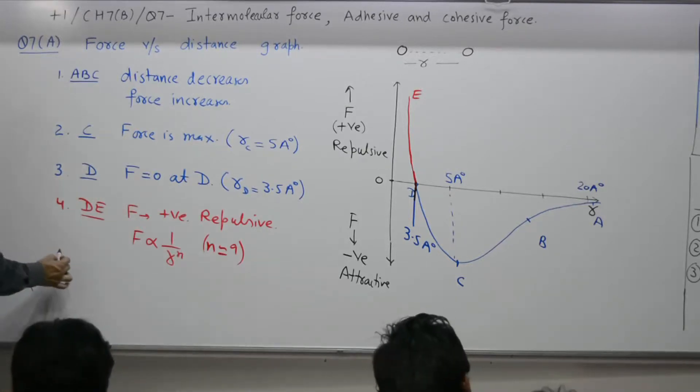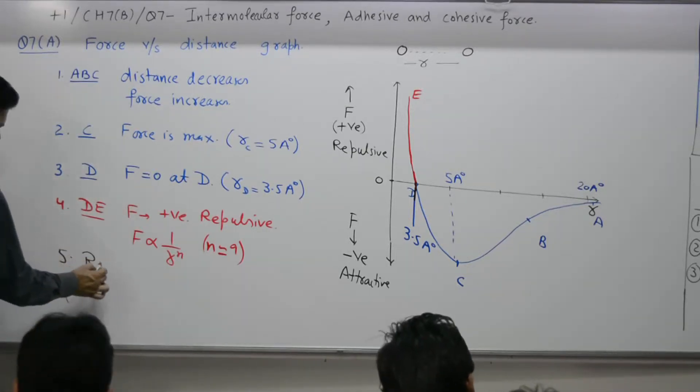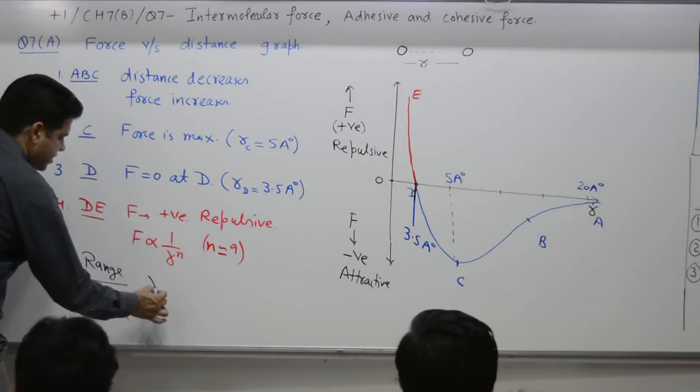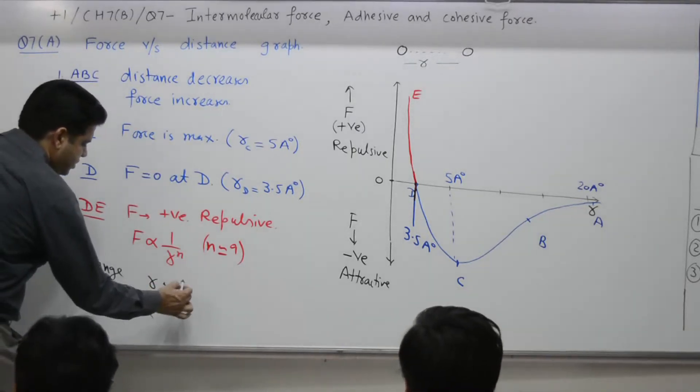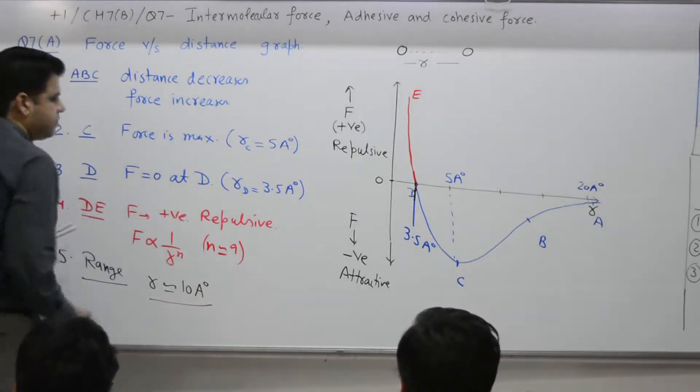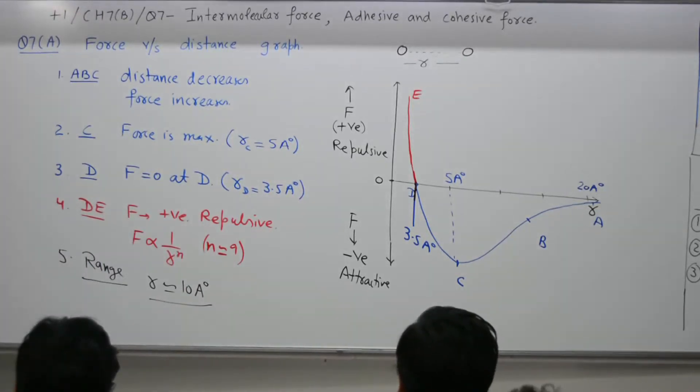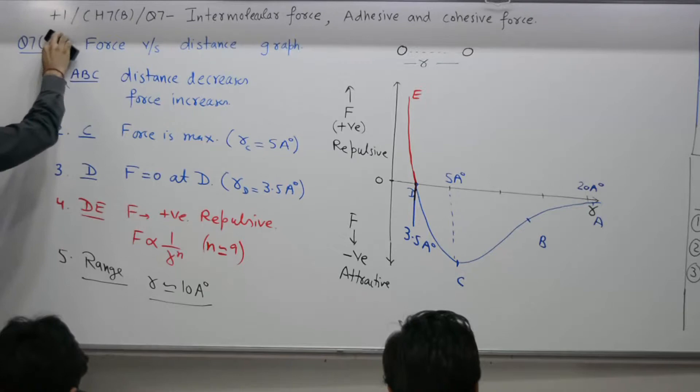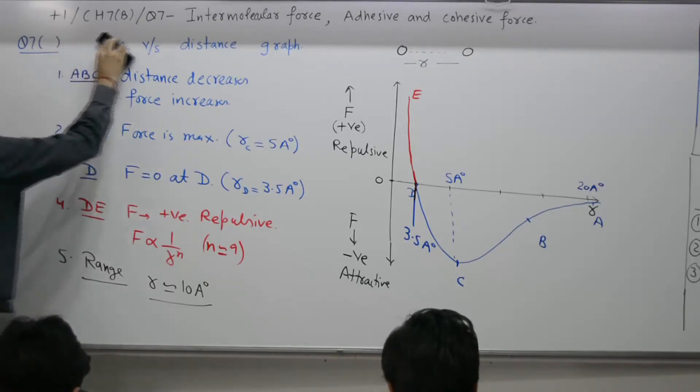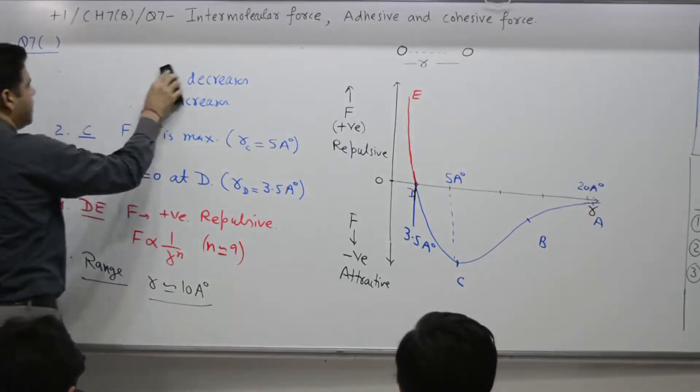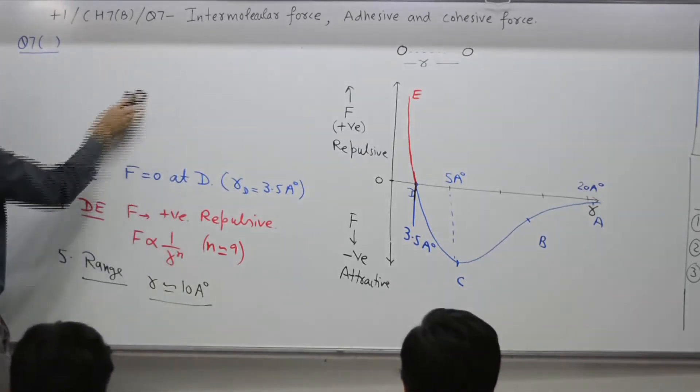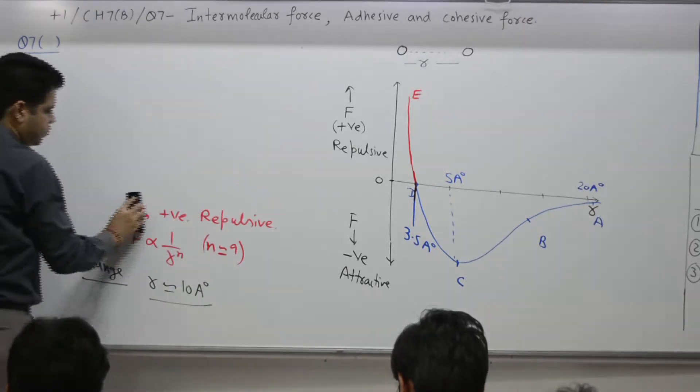Last point: range. A molecule affects other molecules, attracts others at a distance of approximately 10 angstroms. This is known as range. Question number 7, B part.